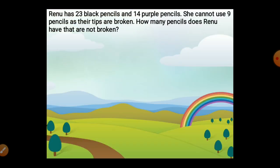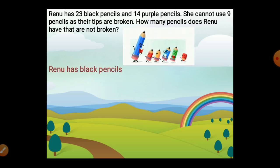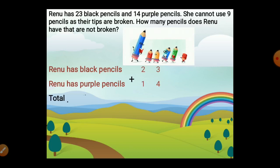Reno has 23 black pencils and 14 purple pencils. She cannot use nine pencils as their tips are broken. How many pencils does Reno have that are not broken? Reno has total how many pencils? 23 black and 14 purple. So for finding total pencils we are doing addition. 3 plus 4 is 7 and 2 plus 1 is 3. Total pencils: 37.